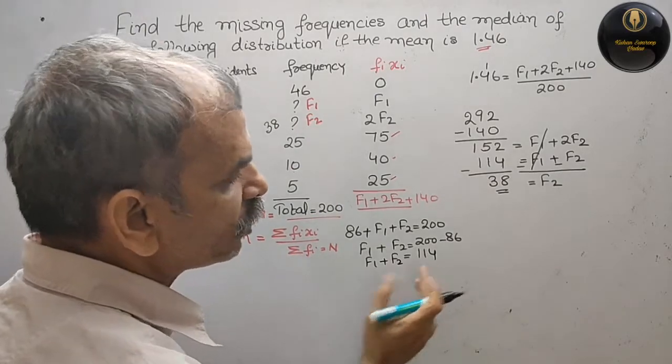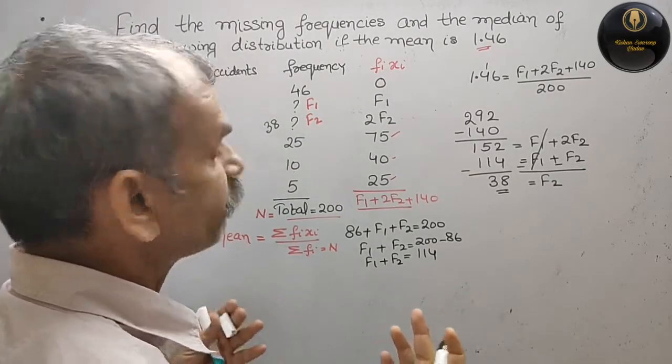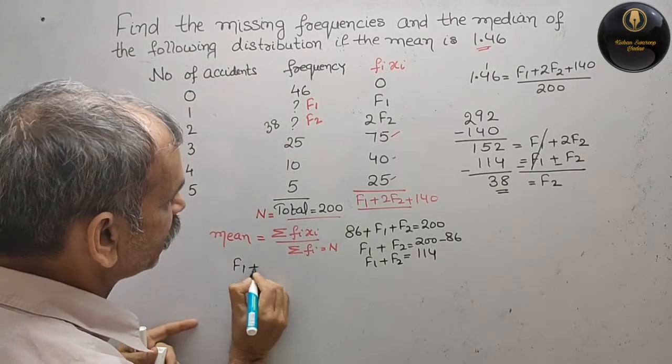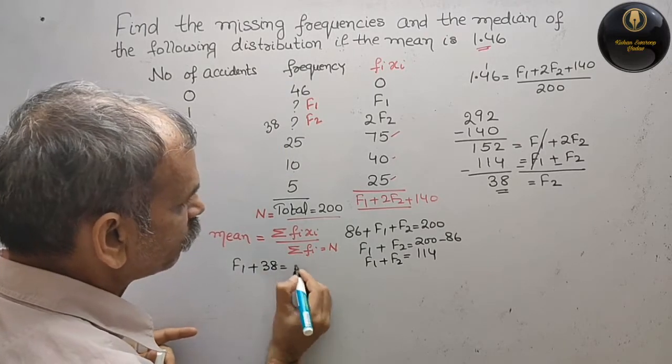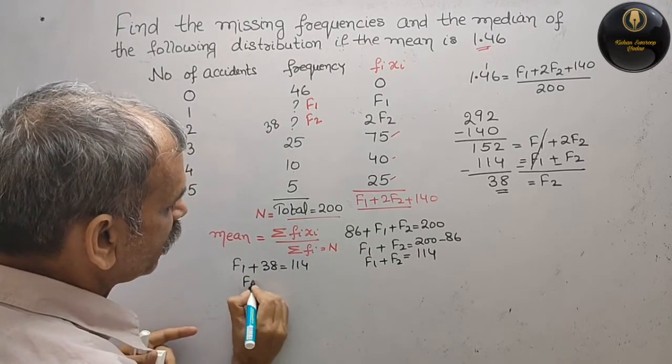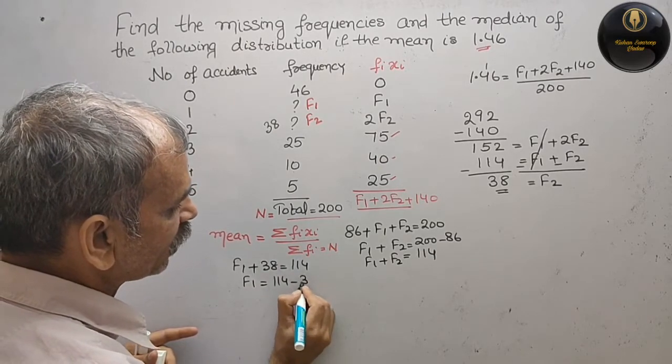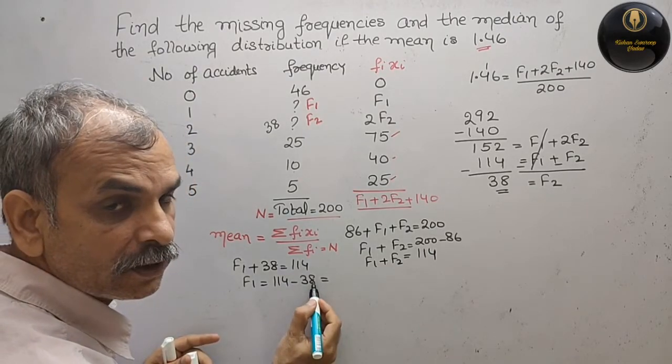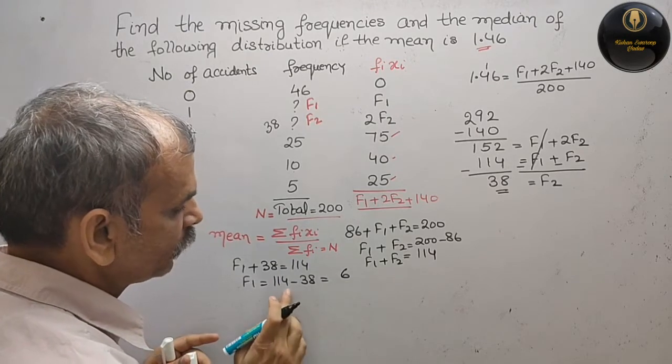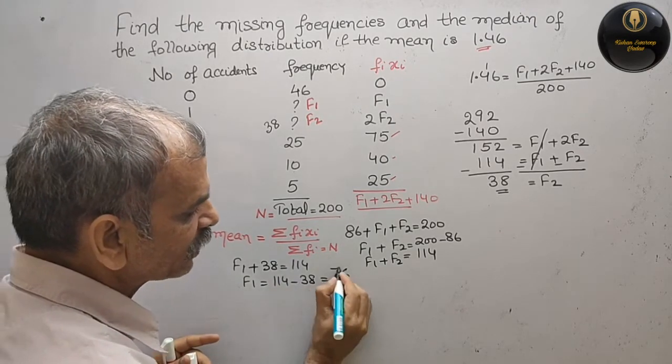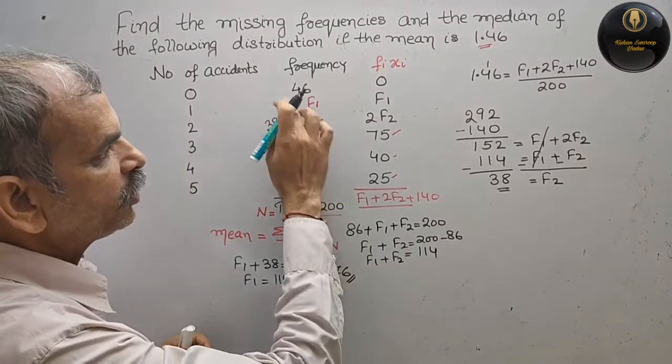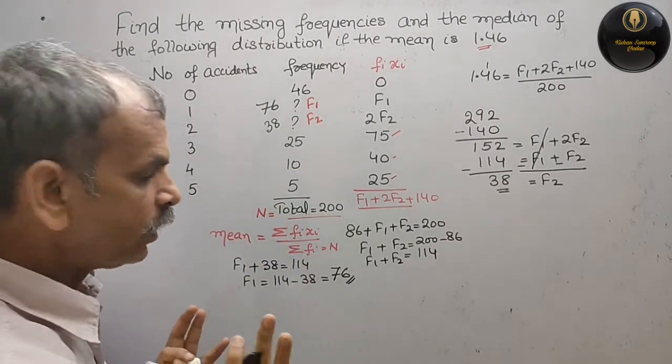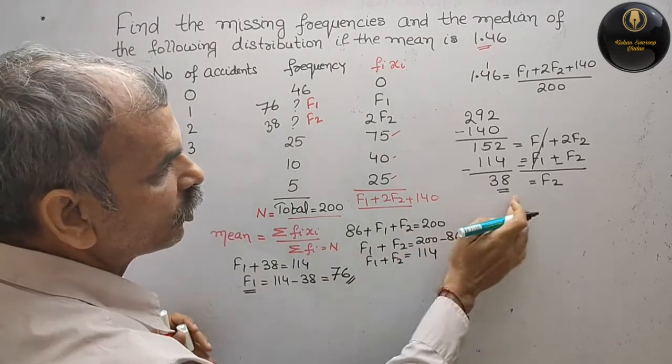But we know that f1 plus f2 is 114. What is f2 now? f1. So we will go for that only. This is f1 plus 38 that is equal to 114. So f1 is equal to 114 minus 38. That is equal to what? 14 minus 8 is your 6. Next comes your 10, 10 minus 3 is 7. 76. So f1 is your 76. Now we got two frequencies. So this is your f1 and this is your f2.